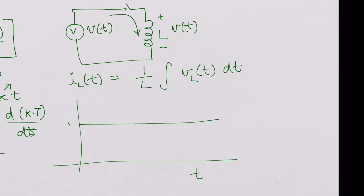Now this is V. Now we try to plot I(t) here. So now VL(t) is V.